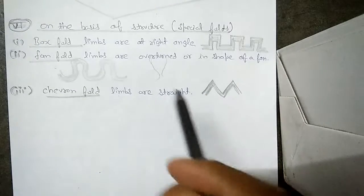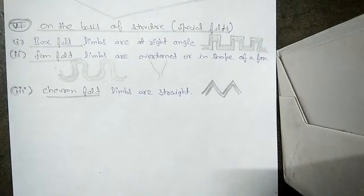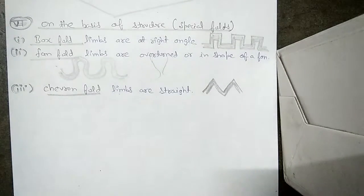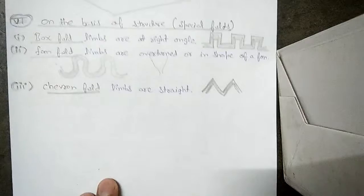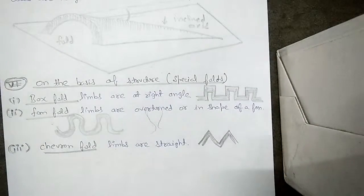They form a beak-like structure. Such folds are called chevron fold. And here the types of folds are completed.